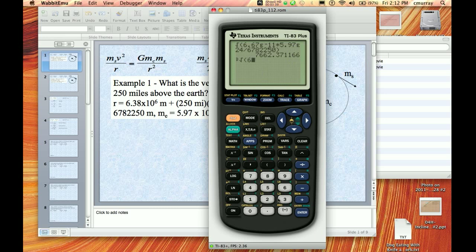And then what was it? It was Gm_cT². So 6.67 E-11 times 5.97 E24 times T², so 86164. Don't forget to square that.